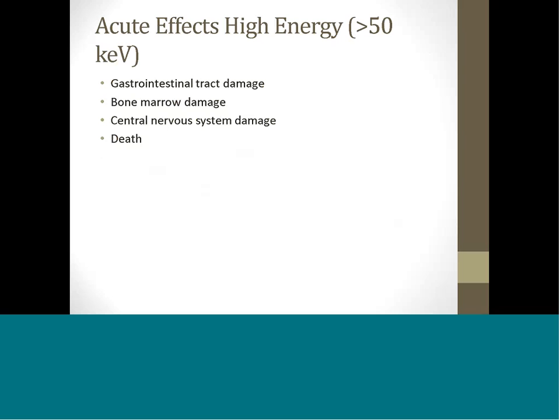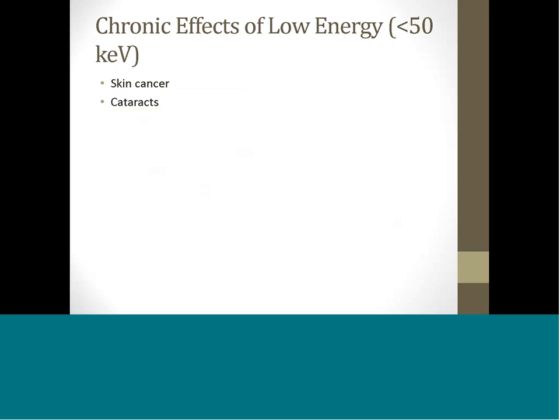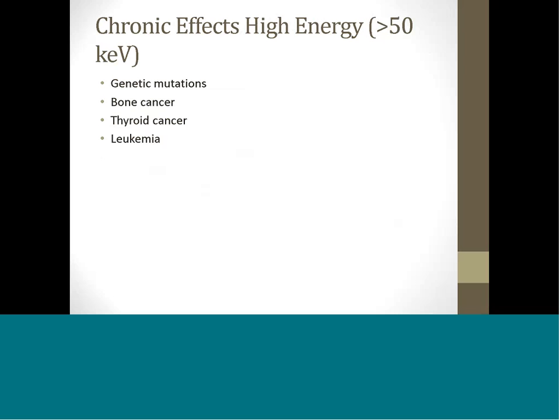By penetrating deep into the body, higher energy radiations can cause damage to the lining of the gastrointestinal tract, the blood-forming cells in the bone marrow, and the central nervous system. Ultimately, these effects can result in death. An acute dose of 400 to 450 rad is generally considered the dose that will kill 50% of the exposed population if no medical assistance is available. Any observable biological damage caused by long-term exposure to low energy X-rays will involve surface effects, such as skin cancer or cataracts of the eye. Observable biological damage caused by long-term exposure to high energy X-rays will not be restricted to surface effects. It may include genetic mutations, various organ cancers, and leukemia.